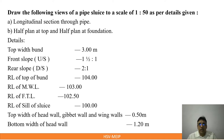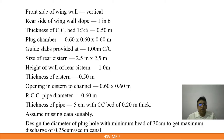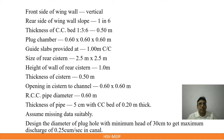Let us move on to the next slide. Here you can observe the front side of the wing wall - the front side is vertical. The rear side of the wing wall has a slope of 1 in 6. Sometimes they may give the bell mouth width, sometimes they may give 15 degrees or 30 degrees, or sometimes they may give the slope. If it is not given, you have to assume.